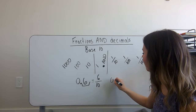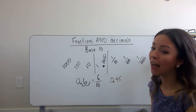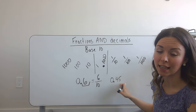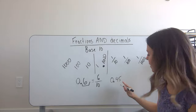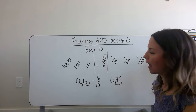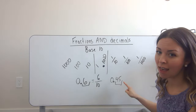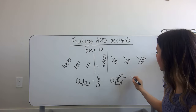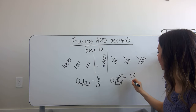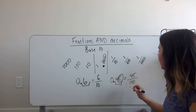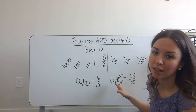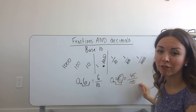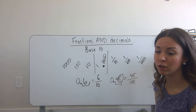If I have the number 0 and 45 hundredths, I know it's going to be 100 in the denominator because I say the number by itself — 45 — and then say the last place value, hundredths. So that fraction is going to be 45 in the numerator and 100 in the denominator. Zero and 45 hundredths is the same as 45 hundredths, or 45 over 100.